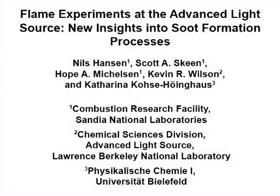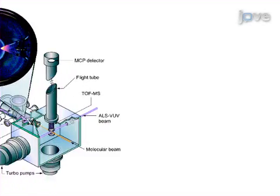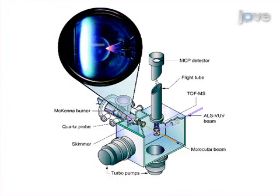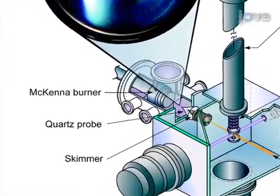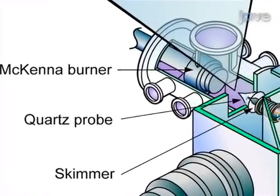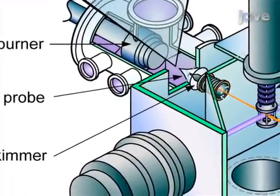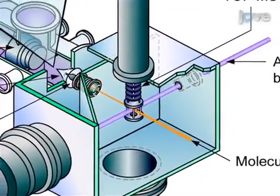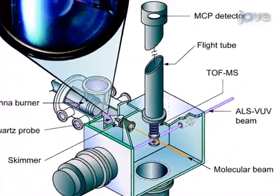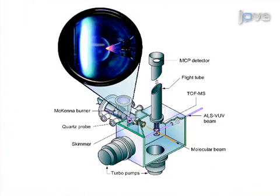The overall goal of this procedure is to analyze the chemical composition of laboratory-scale hydrocarbon flames to develop a detailed understanding of soot formation in combustion environments. This is accomplished by first establishing burner-stabilized premixed flames under a reduced pressure of about 20 to 80 millibars. The second step is to withdraw gases from these flames and to then determine the chemical identity of the sampled species by using a custom-built time-of-flight mass spectrometer with vacuum ultraviolet photoionization.